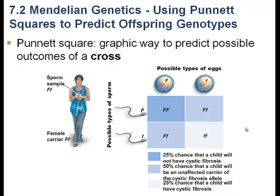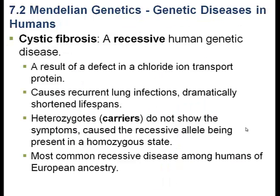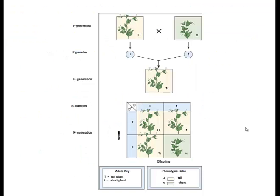Interestingly, this is simple Mendelian inheritance — the most basic type of inheritance, and what Mendel observed in his pea plants. We need to understand this before we can understand any other type of inheritance. Let's look at what Mendel actually observed.